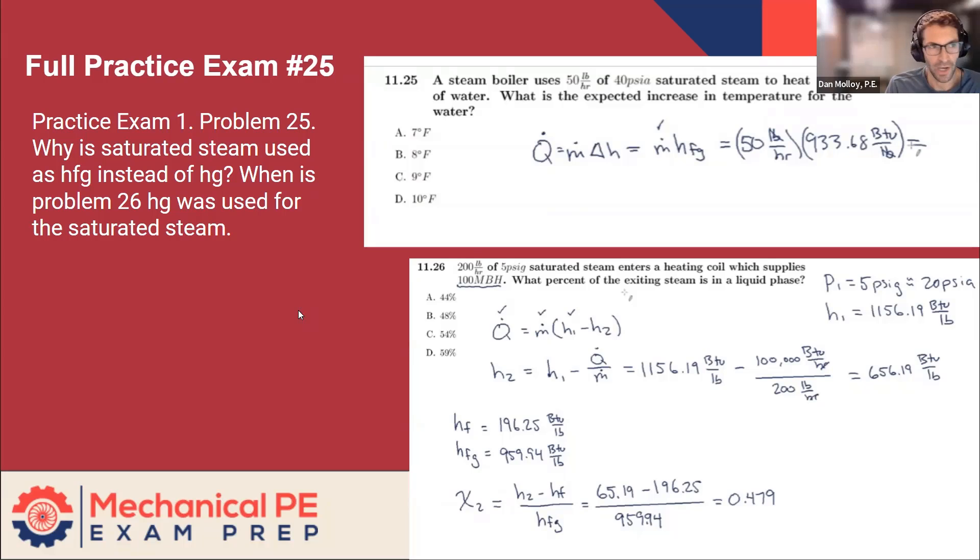So we're sort of stuck. We really can't move forward in this problem because what we need is an M dot delta H. And the problem is inviting you to assume that the entire latent heat of vaporization of the steam is given up as it heats this water. Not obvious, but also not crazy. I've seen problems like this.